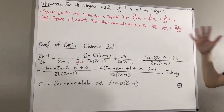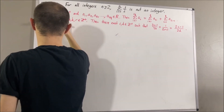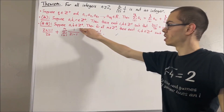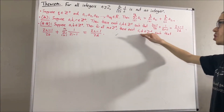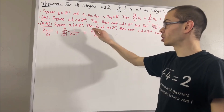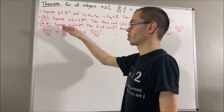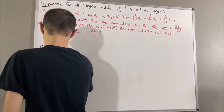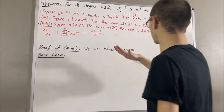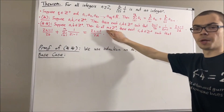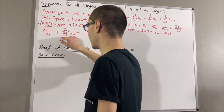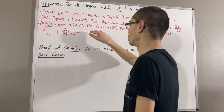Another preliminary result that we're going to be using is the following. Suppose a and b are positive integers. Then for all positive integers m, there exist positive integers c and d such that (2a − 1)/2^b plus the sum from i equals 1 to m of 1/(2^i − 1) is equal to (2c − 1)/2^d. To prove ★★, we're going to use induction on m. So let's start with the base case, where m is equal to 1.